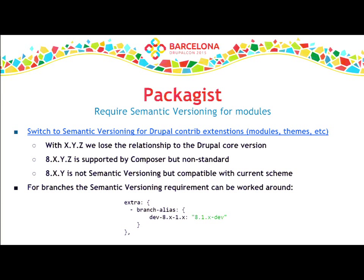To clarify what currently happens: when you type composer install right now in 8.0.x, it fetches the Drupal slash core package from Packagist because we have the dependency on the Composer installers plugin and on Drupal slash core in the root composer.json. It completely wipes the core directory that's there in git and puts the package there — that's why we had the ugly git diff. What we're trying to avoid is Composer touching the core directory when it's already there in git. If it's not there, we want it to install. We need to support both.